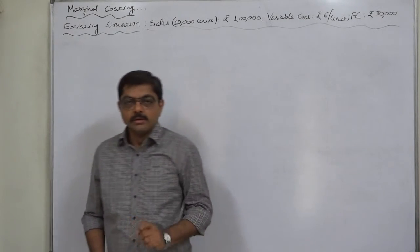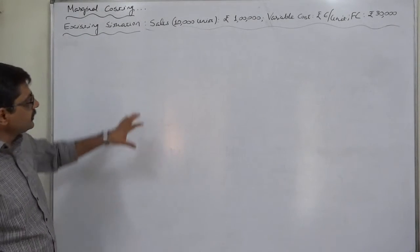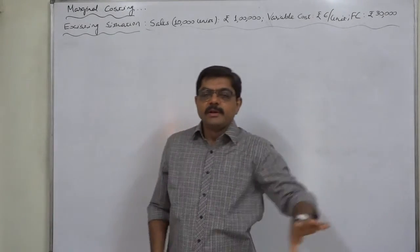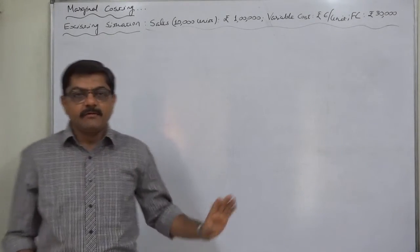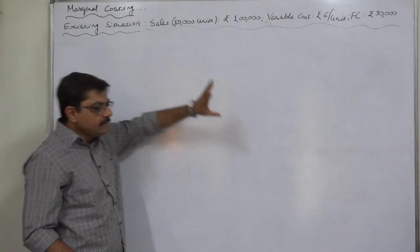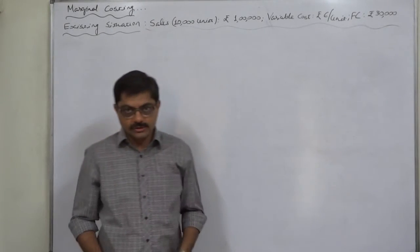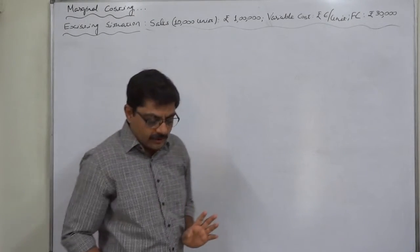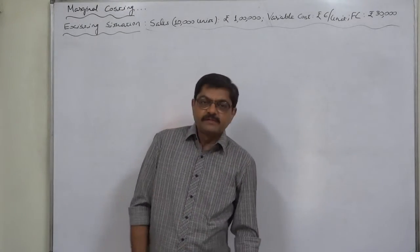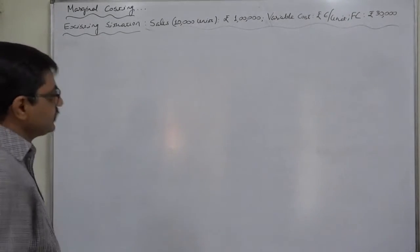So in all, there are seven parts of the solution. First, we need to calculate contribution per unit, PV ratio, BEP, margin of safety and required sales in the existing situation, and in the other six proposed or estimated situations. We are going to cover the solution in seven different parts. Let us first find out all the things under the existing situation.